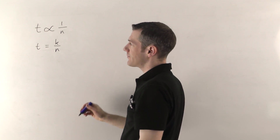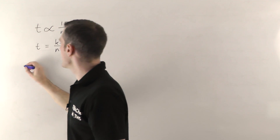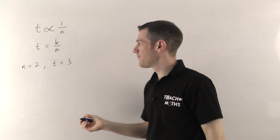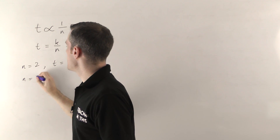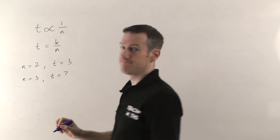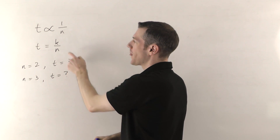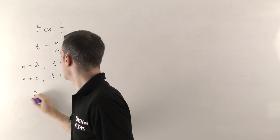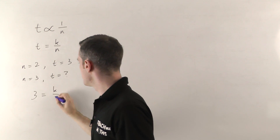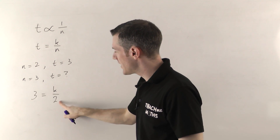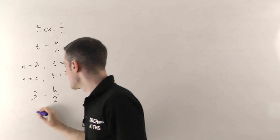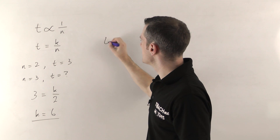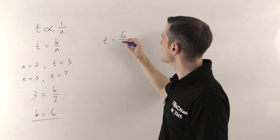They'll give you an example: when two people mow the lawn, n is 2, and it takes 3 hours, so t is 3. They'll ask: if three people mow the lawn, how long will it take? Use the example to work out K first. So 3 equals K divided by 2. Multiply both sides by 2: K equals 3 times 2, which is 6. Substitute back: the full equation is t equals 6 divided by n.